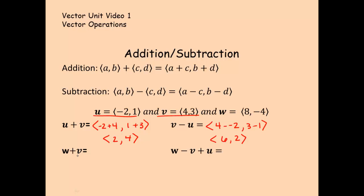For w plus v, addition does not matter which order you add them in, but let's go ahead and stick to w plus v and stay in that order. So eight plus four and then negative four plus three simplifies to 12, negative one as my resulting vector.